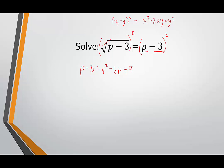Now what we're left with is a quadratic. We have a p squared that's not going to cancel, so we want to set this equal to 0 because that's the strategy we use when we have quadratics. That means I'm going to subtract p from both sides and add 3, which gives us 0 equals p squared minus 7p plus 12.